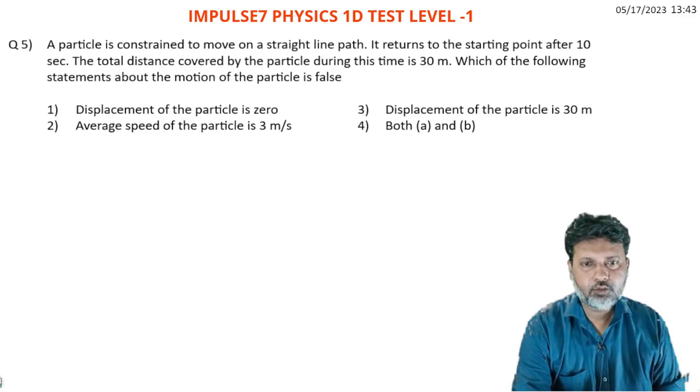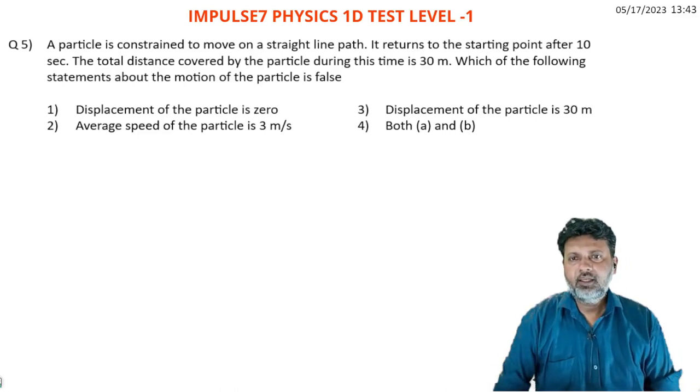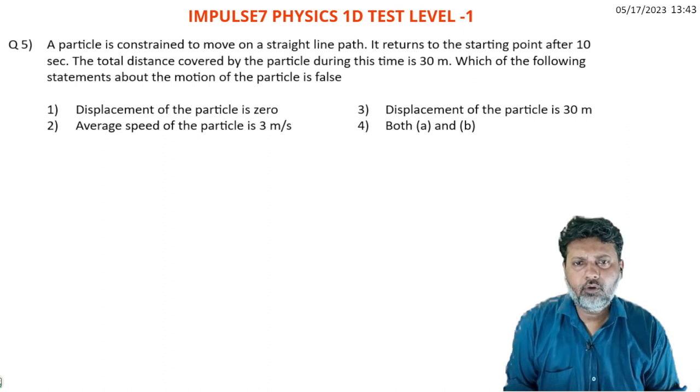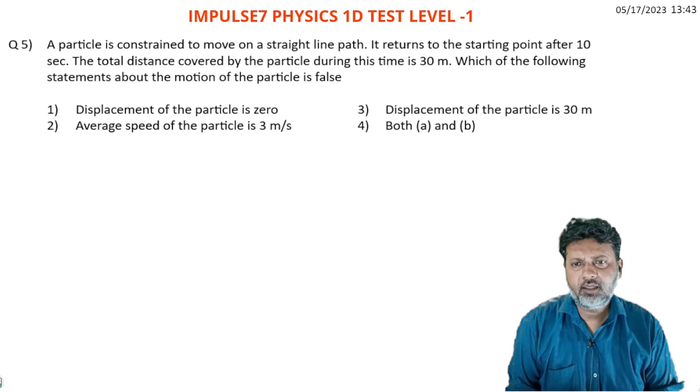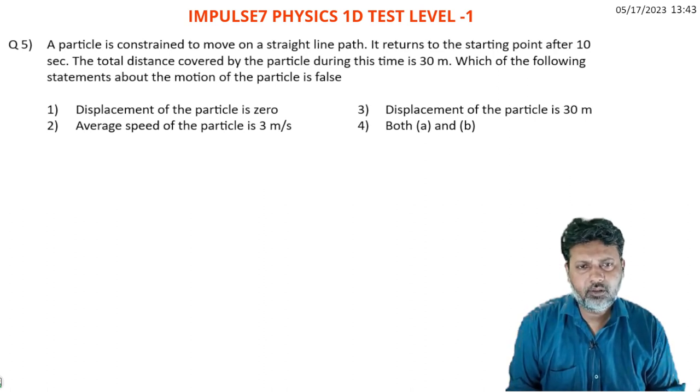Next question. A particle is constrained to move on a straight line path. It returns to the starting point after 10 seconds. The total distance covered by the particle during this time is 30 meters.